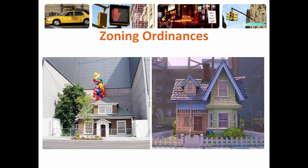You will see extreme zoning problems in some cities. For example, this is a photo of the Up House — a real house from the movie Up in Seattle, Washington, where one person did not want to sell their home and the developer just built skyscrapers around it. Eventually the home was demolished and now a business exists there. Zoning ordinances protect someone from this happening in your residential neighborhood.